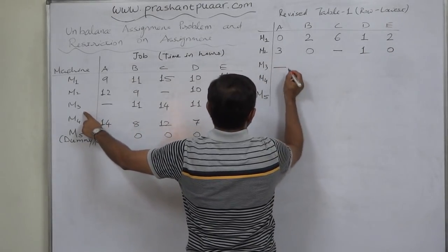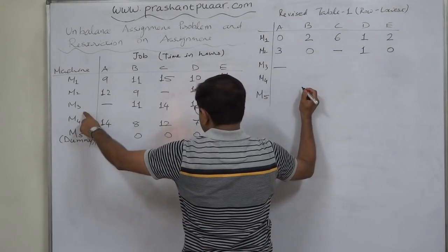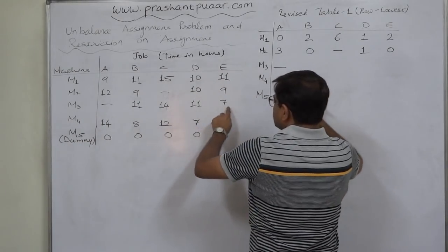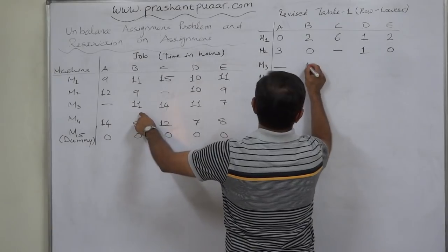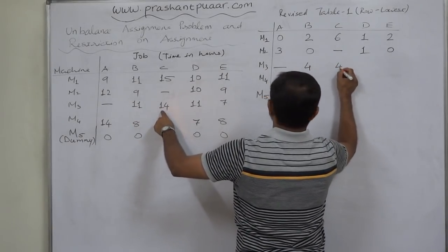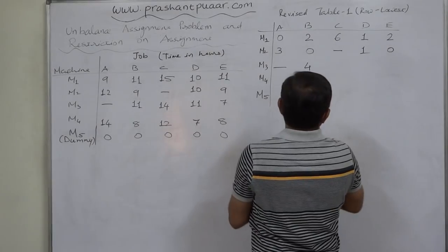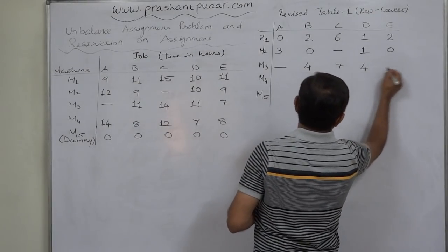In this row also, no effect. In machine, rather job A. Lowest value is 7. 11 minus 7, 4. 14 minus 7, 7. Again, 11 minus 7, 4. 7 minus 7, 0.